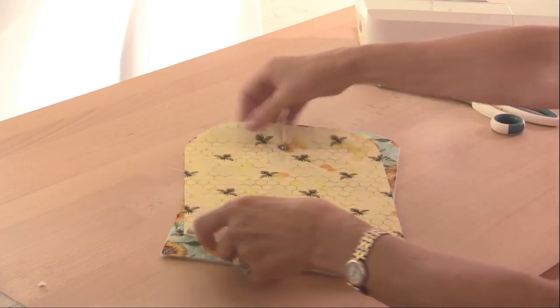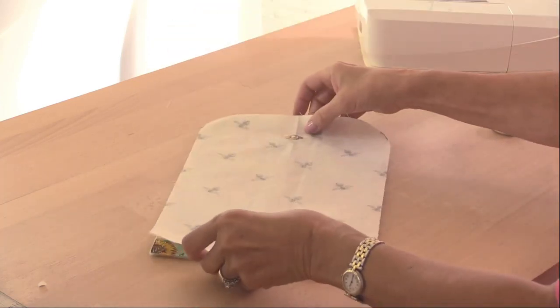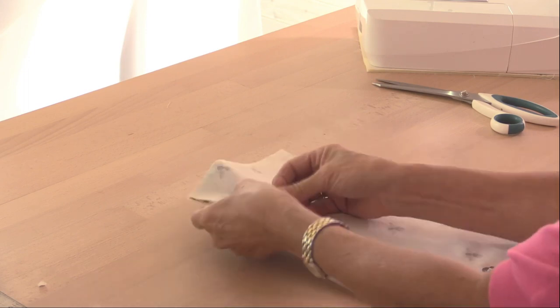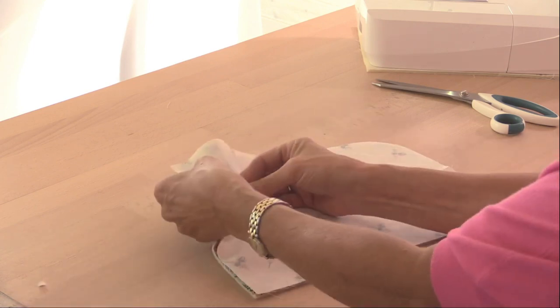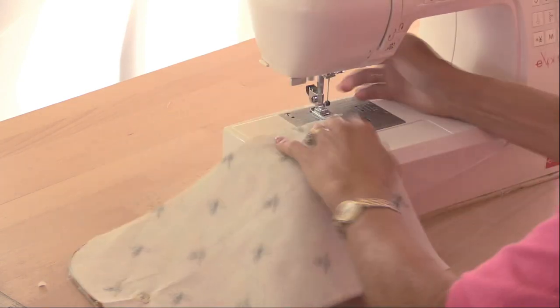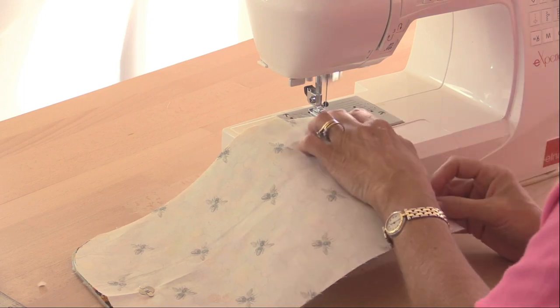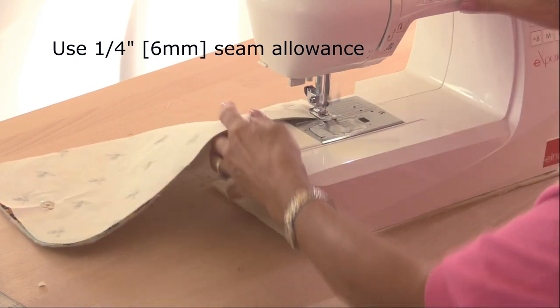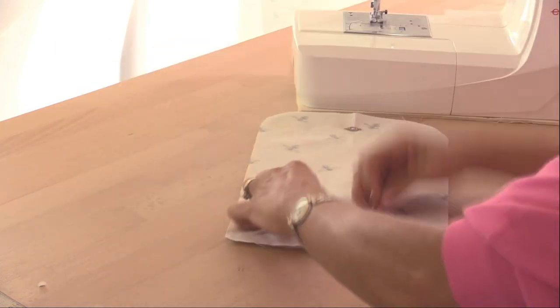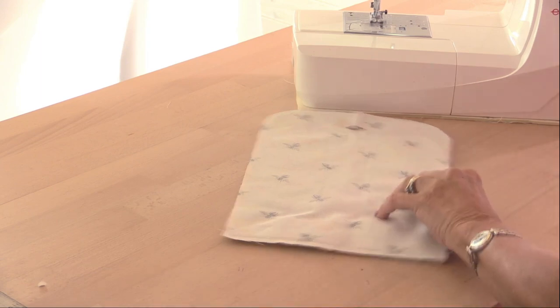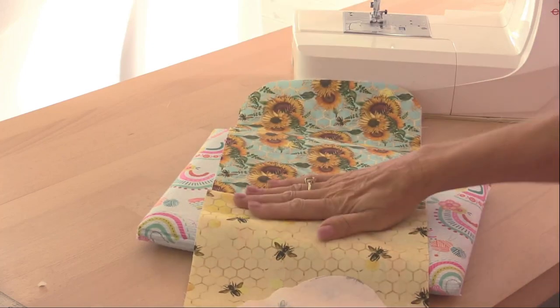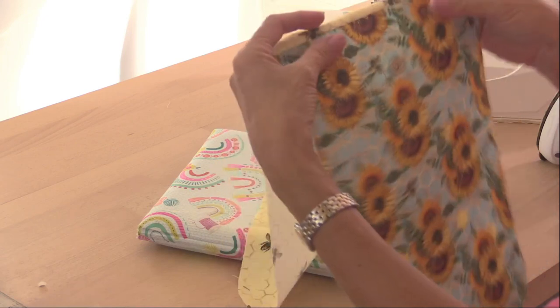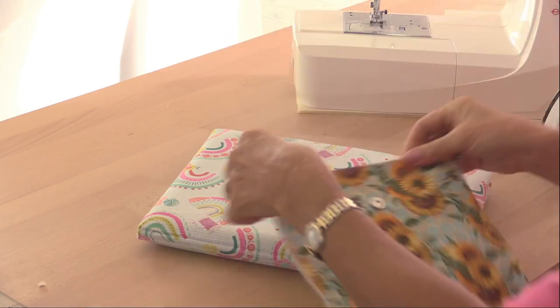Then we're going to take the two pieces right sides together and sew just across the long side of the straight side here. I'm using a quarter of an inch or six millimeter seam allowance. I can take the pins out now. I'm just going to bring in my ironing mat and press this. And then fold so that the seam sits right on the edge and press.